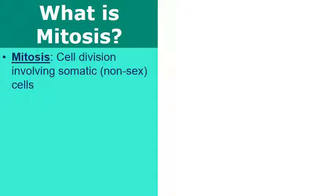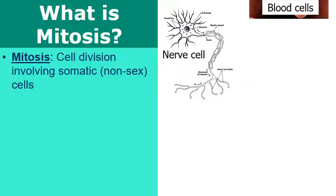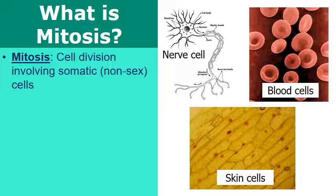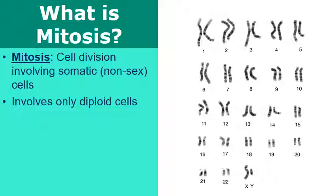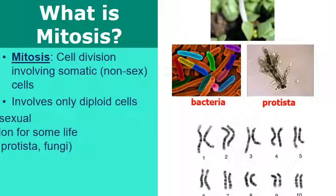Mitosis is a type of cell division that involves somatic, or non-sex, cells. Examples of somatic cells include neurons, red blood cells, white blood cells, and skin cells. The vast majority of the body is made up of somatic cells. If we examine their chromosomes, we find them to be diploid — arranged in pairs, as shown in this karyotype with two copies of each chromosome number.